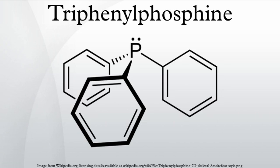Azides react with PPh3 to give phosphazines, analogs of OPPh3, via the Staudinger reaction: PPh3 + RN3 → RN=PPh3 + N2. The phosphazine can be hydrolyzed to the amine. Typically the intermediate phosphazine is not isolated: PPh3 + RN3 + H2O → OPPh3 + N2 + RNH2.